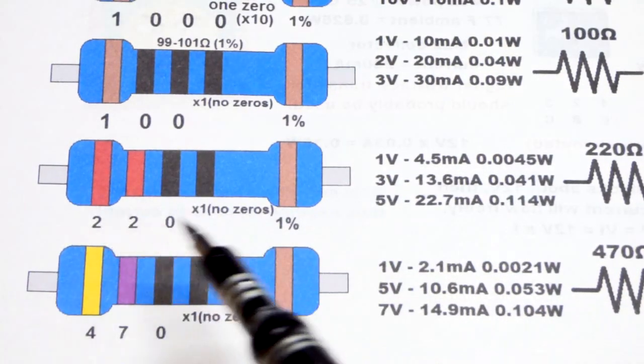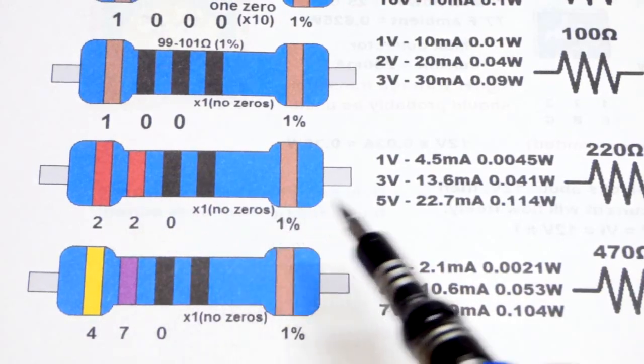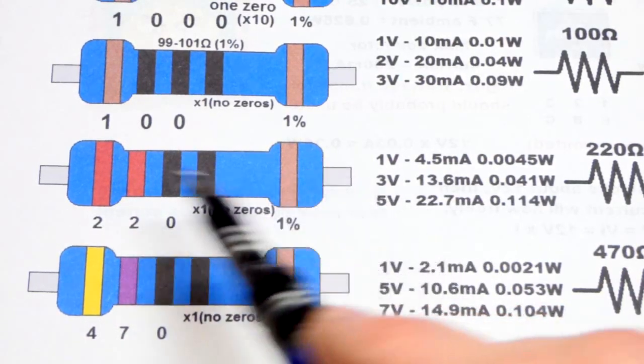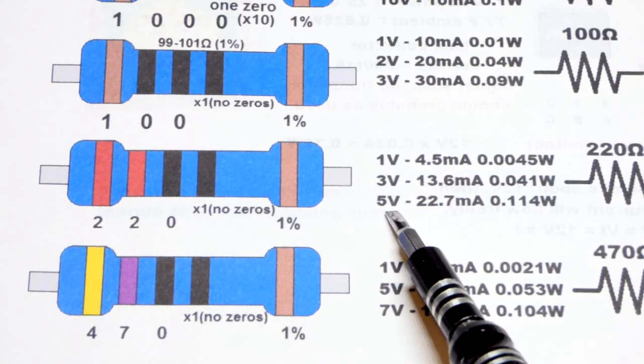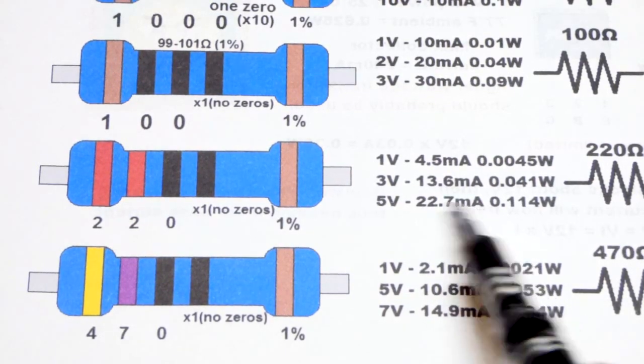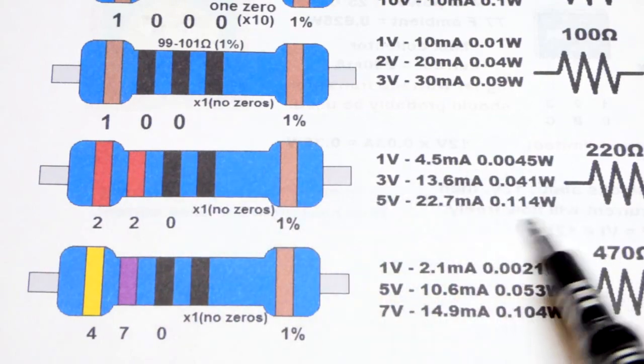And that brings us to the 220 ohm resistor. Next higher value resistor and with 5 volts across it, that's what I mostly work with these days and I think the vast majority of people. You have 22.7 milliamps of current going through it and it's not going to overheat.